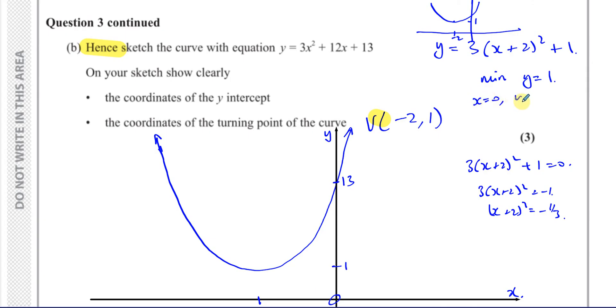So the vertex, it says the coordinates of the y-intercept, so we can say (0, 13). It says coordinates, so write it in coordinate form. And the vertex, we can see, they want the coordinates of that, so it's going to be -2, as we said, and 1. (-2, 1) is the vertex. So that's all we have to show, and we have completed this question.